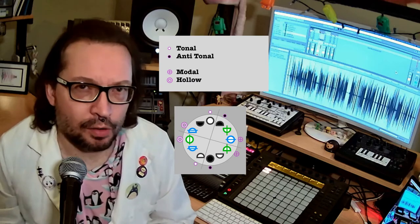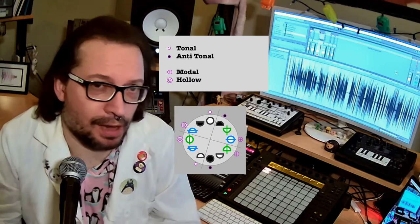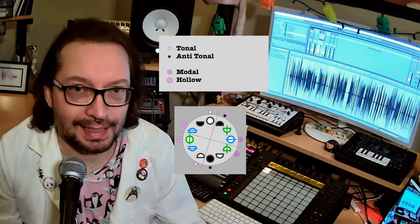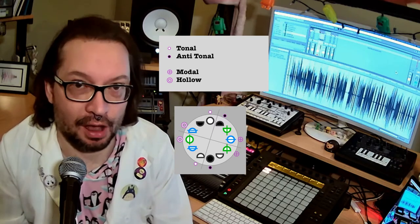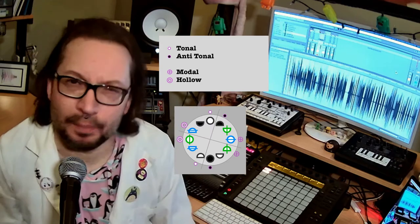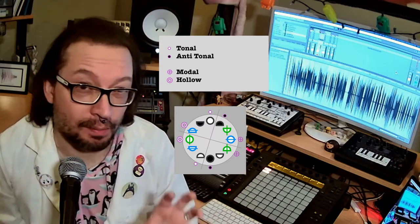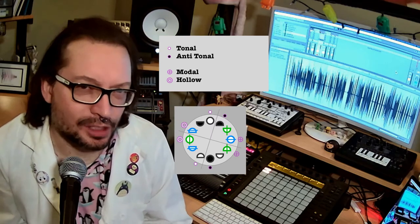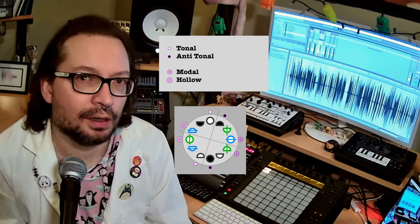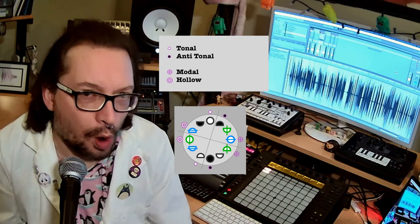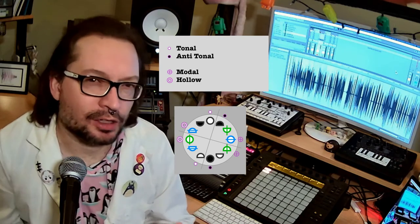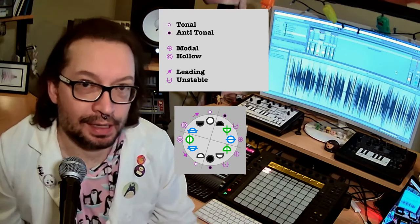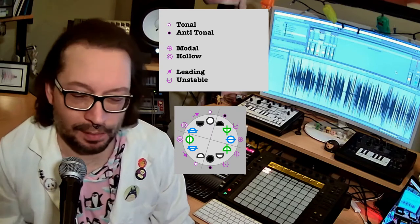The next set of roles are modal and hollow. Modal notes are the ones that make a major key sound major or happy. When you add a modal note, you're really weighting a sense of emotionality to that song — be it happy or sad, or perhaps better described as brighter or darker. Hollow notes, on the other hand, don't inherently change the flavor of what you're saying — they do, however, clash or reinforce that modality. Finally, we get into the unstable and leading roles, which are the most important in my opinion.